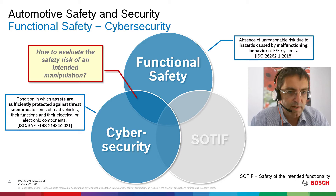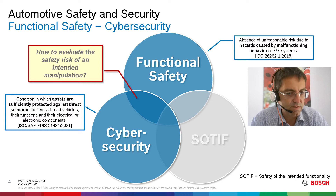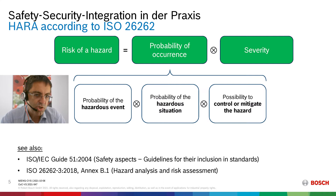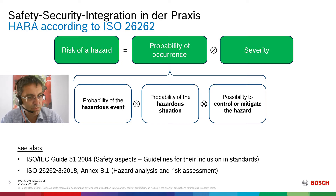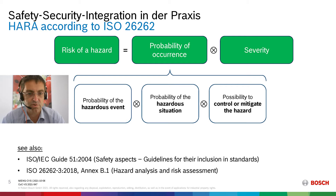The first question is how to evaluate the safety risk of an intended manipulation — how do functional safety and cybersecurity come together? In general, the risk of a hazard is the combination of the probability of occurrence and the severity. This pattern of risk can also be applied to financial risks or any other kind of risk — it's a very generic pattern, described in the ISO IEC Guide 51, Safety Aspects Guidelines for the Inclusion in Standards.